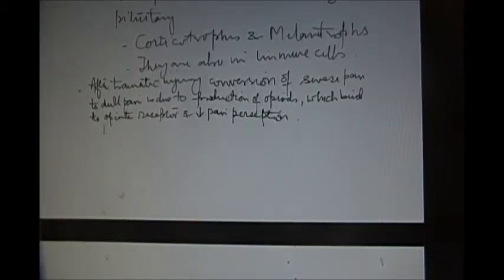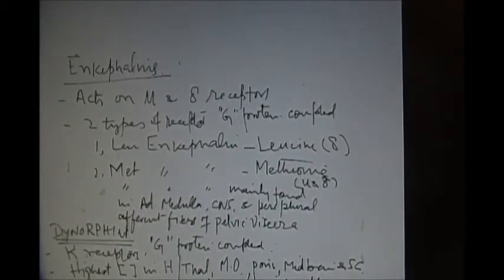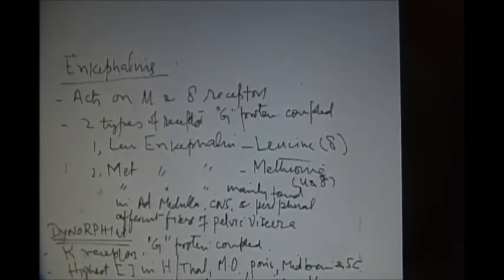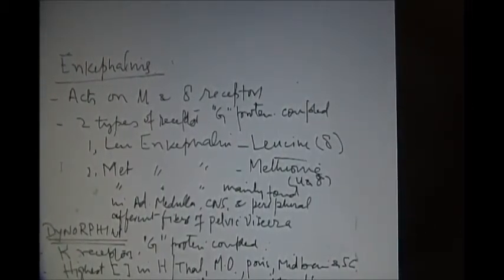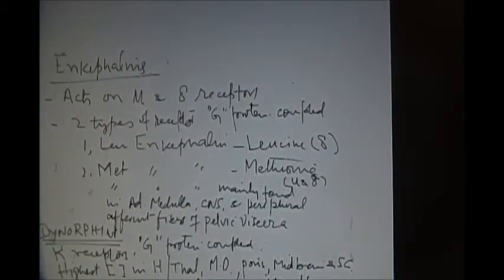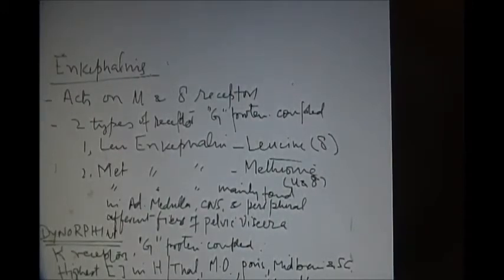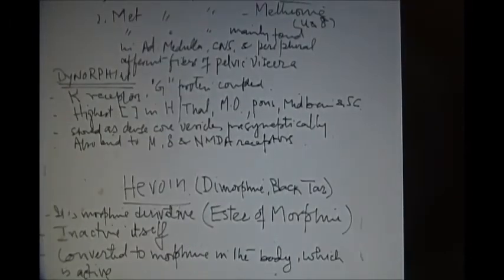The enkephalins. The enkephalins act on mu and delta receptors. There are two types of receptors that are G protein coupled. The leu-enkephalins from leucine and met-enkephalins from methionine. Met-enkephalins are mainly found in adrenal medulla, central nervous system and peripheral afferent fibers of the pelvic viscera.